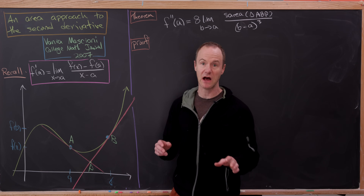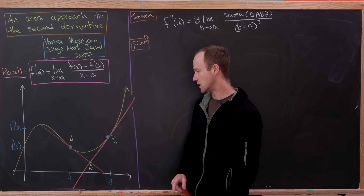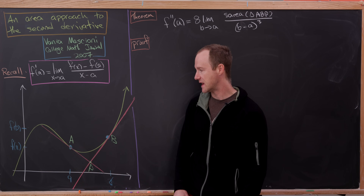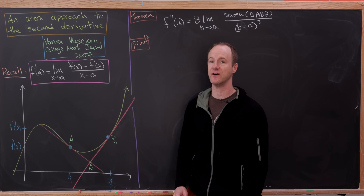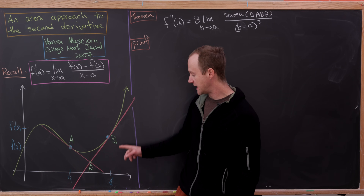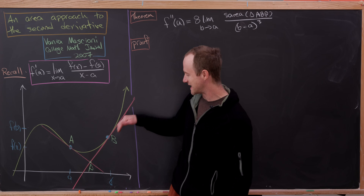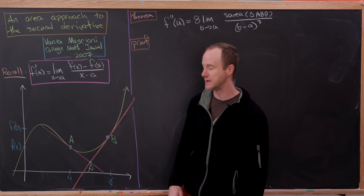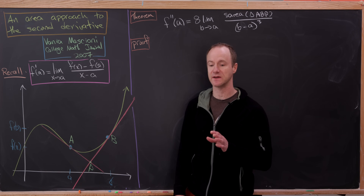Now let's look at the picture of our setup. We've got the graph of a function f in yellow, and I've put two points on this graph. One, which I'll call capital A, has x-coordinate a and y-coordinate f(a), because it's on the graph. Then we have another point, capital B, with x-coordinate b and y-coordinate f(b). We'll draw tangent lines to the graph y = f(x) at a and b, and then look for their intersection, which we'll call point P.